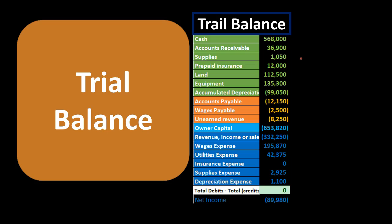Another common format for the trial balance is to have debits represented with non-bracketed or positive numbers, and credits represented with bracketed numbers. There are advantages to this format for addition and subtraction, especially when using software like Excel. For example, revenue at a credit — Excel sees the bracketed number as a negative number.